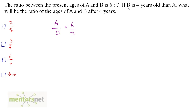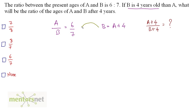And B is 4 years older than A, so we have B is equal to A plus 4. We need to find what the ratio of ages of A and B will be after 4 years, which is A plus 4 by B plus 4. If we put the value of B in the ratio equation, we get A by A plus 4 is equal to 6 by 7.